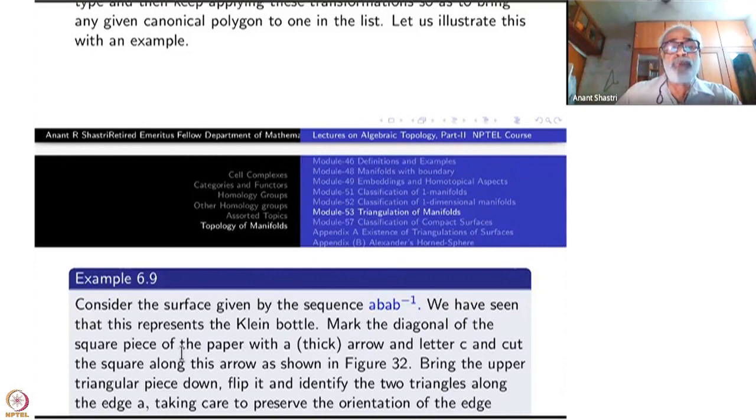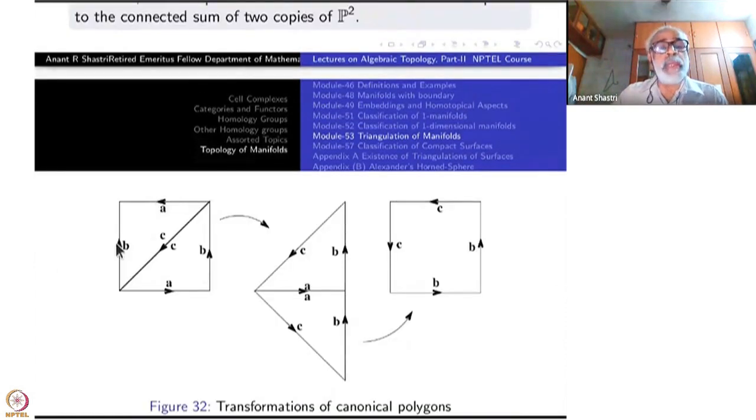Mark the diagonal of the square piece. You may do it on your own right now. Take a rectangle piece. Mark A, B, A, B inverse. And take the diagonal piece. Draw a diagonal with a thick arrow and label it as C. And cut the square along this arrow as shown in figure 32 here. See, B is in the opposite direction. So A, B, A inverse.